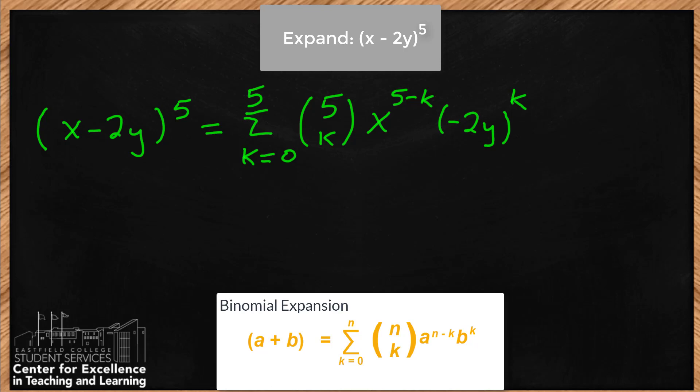We have listed the formula, but the problem is actually to expand this. With summation notation, you start at the bottom with the starting index of k=0 and work towards the top with the stopping index at k=5. I like to just go through and list each term. I'm going to put my equal sign way over here because you're going to have a long expression. The first one is k=0.